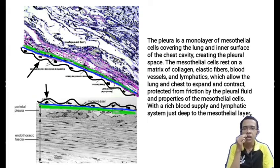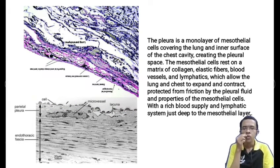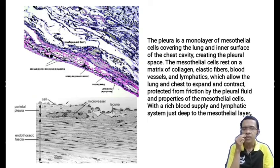This structure allows the lung and chest to expand and contract. It is protected from friction by the pleural fluid and properties of the mesothelial cells. Underneath these mesothelial cells, beneath the epithelium, lie the blood vessels and lymphatics — so blood vessels and lymphatics lie just deep to the mesothelial layer.